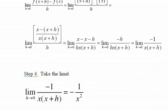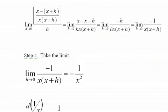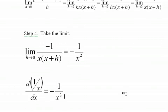I take the limit, and if h goes to 0 this becomes closer and gets closer and closer to x times x on the bottom and negative 1 on the top. Bring the negative out front and my answer is negative 1 over x squared. So my derivative of 1 over x is negative 1 over x squared.